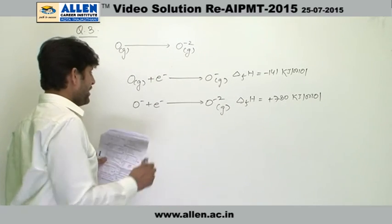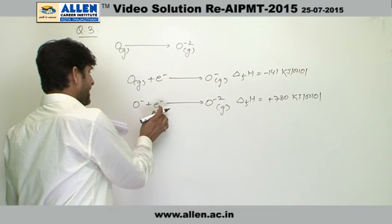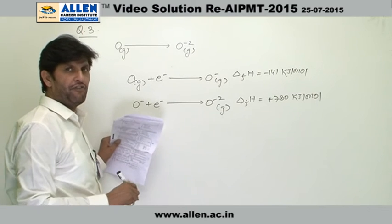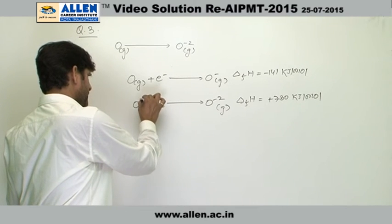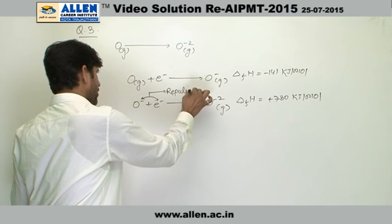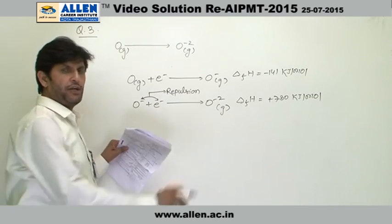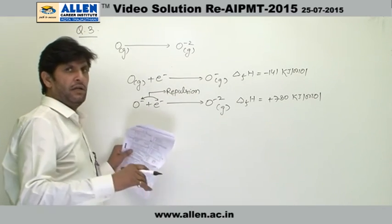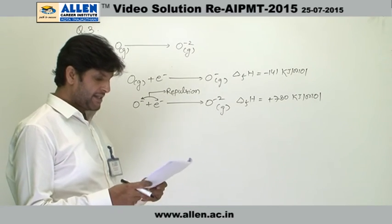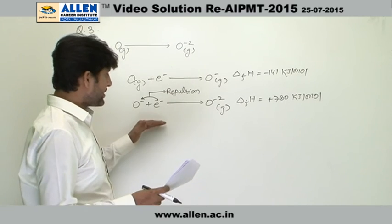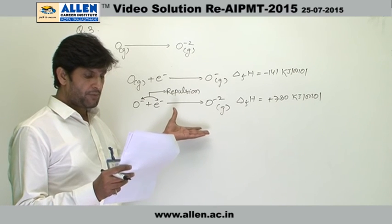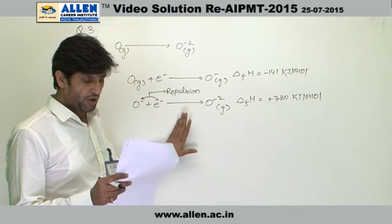Electron repulsion - exactly what happens here. When second electron enters into the shell of oxygen negative ion, there is a repulsion between negative charges of oxygen ion and electron. Due to this repulsion, there is a requirement of energy to overcome this repulsion. As a resultant, this overall process becomes endothermic. That is why the correct answer is third.